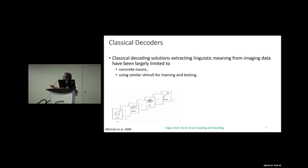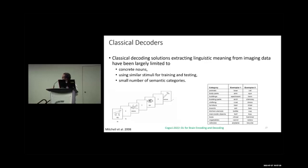The same data — the 60 concrete nouns — is divided for training and testing, with only the 12 semantic categories. In earlier classical decoding works, these were some of the example categories: animals, beer, arm, apartment, and other different words.